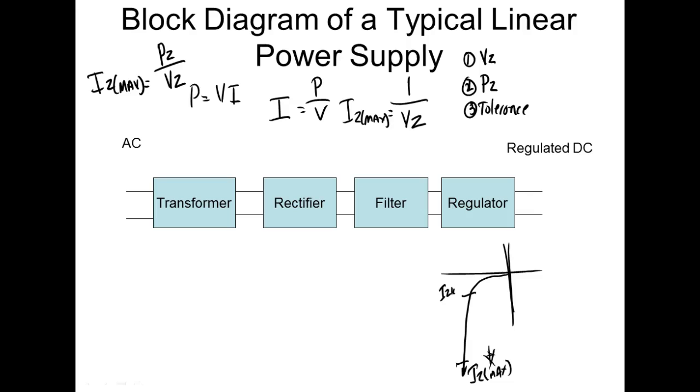So here's our power supply, guys. We've gone through the whole thing. We've got transformers that's going to set our output. We've got rectifiers that's going to convert AC into pulsating DC. We've got a filter that's going to convert pulsating DC into unregulated DC. We've got a regulator that's going to convert unregulated DC into regulated DC. And this is the makeup of what we call a linear power supply.